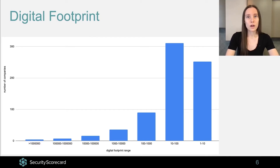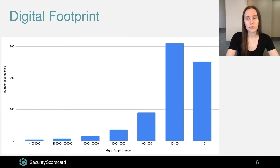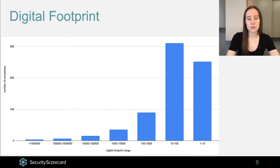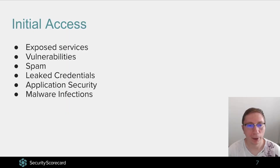I will now let Katalin walk you through the information we managed to find out about the first two stages of ransomware infection — initial access and lateral movement — and then I'll get back to you with data exfiltration techniques and conclusions. Hi, I'm Katalin, and as Doina mentioned, I'll be presenting the initial access and lateral movement parts.